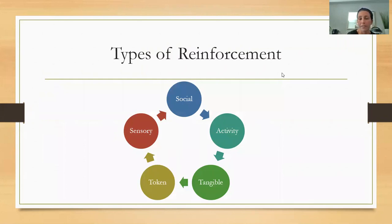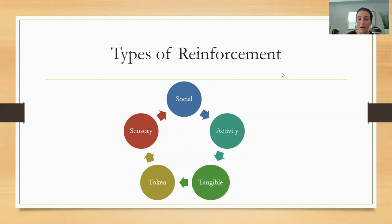There are different types of reinforcement. Social reinforcement includes praise, high fives, hugs, kisses, 'good job.' Activity reinforcement includes coloring, painting, going outside, going to the park. Tangibles include specific items like toys or food. Token economy is used more for higher functioning kids with autism and advanced learners — they earn a certain number of tokens and exchange them for an activity or a reinforcer. Sensory reinforcement is also common; a lot of the children I work with have sensory input as their primary reinforcer.